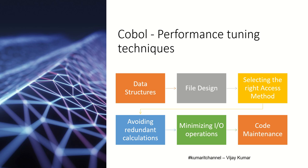Selecting the right access method is also important — choosing the right access method such as sequential, random, or dynamic can have a significant impact on performance. Next is avoiding redundant calculations — reusing previously calculated values instead of recalculating them can save processing time and improve performance. We can also minimize I/O operations — reducing the number of hits to input or output files can also improve performance.